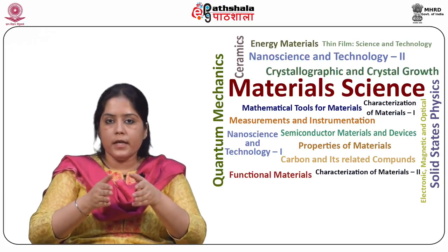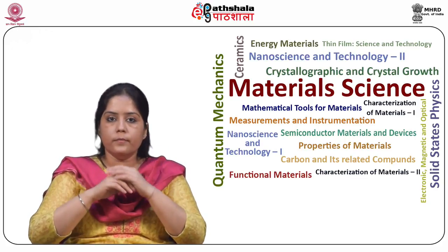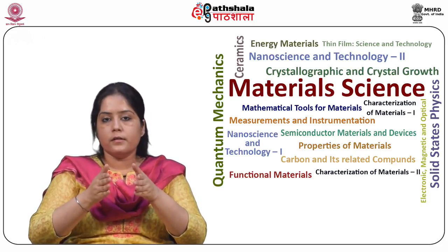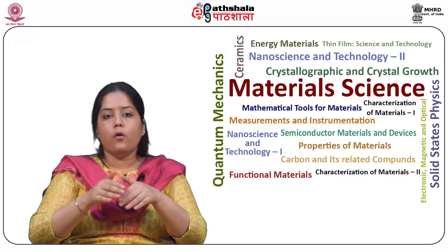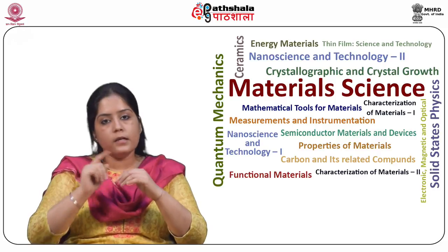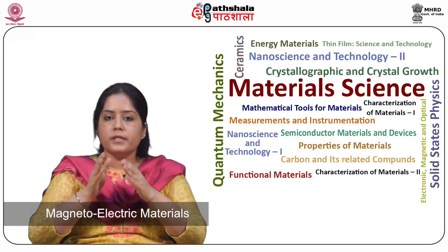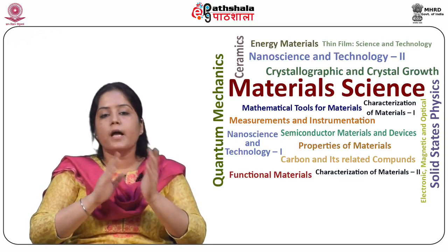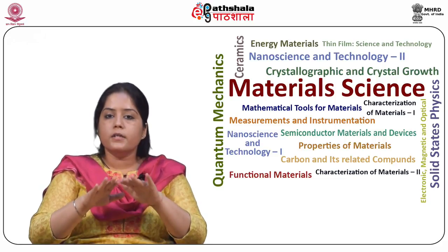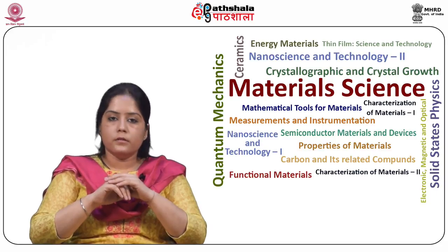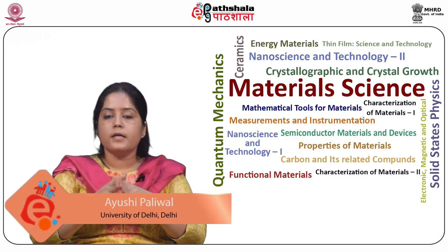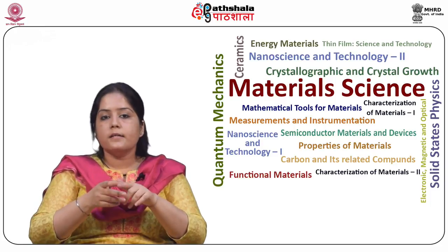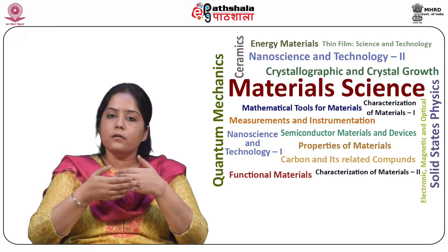To summarize what we have learned in this module: first, multiferroic materials are modern materials exhibiting coupling of functional order parameters in a single phase; second, magnetoelectric materials are those that are simultaneously electrically and magnetically polarizable and are not necessarily multiferroic; third, magnetoelectric coupling is quantified by the linear magnetoelectric coefficient, as the magnetoelectric effect is linear in most compounds. Thank you.